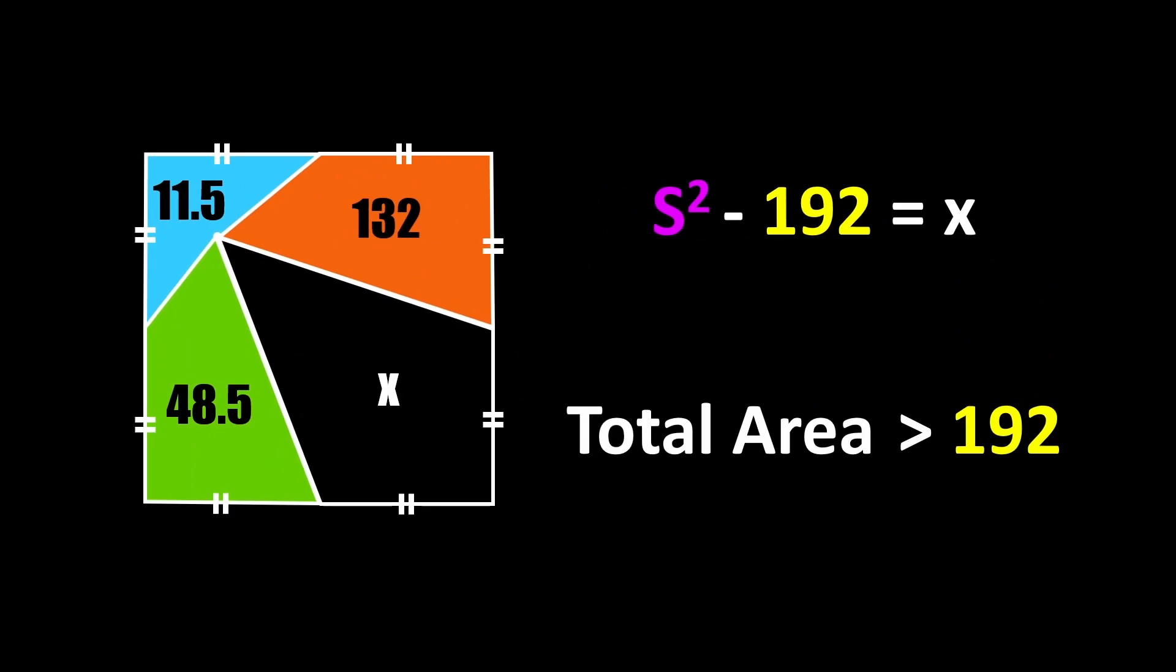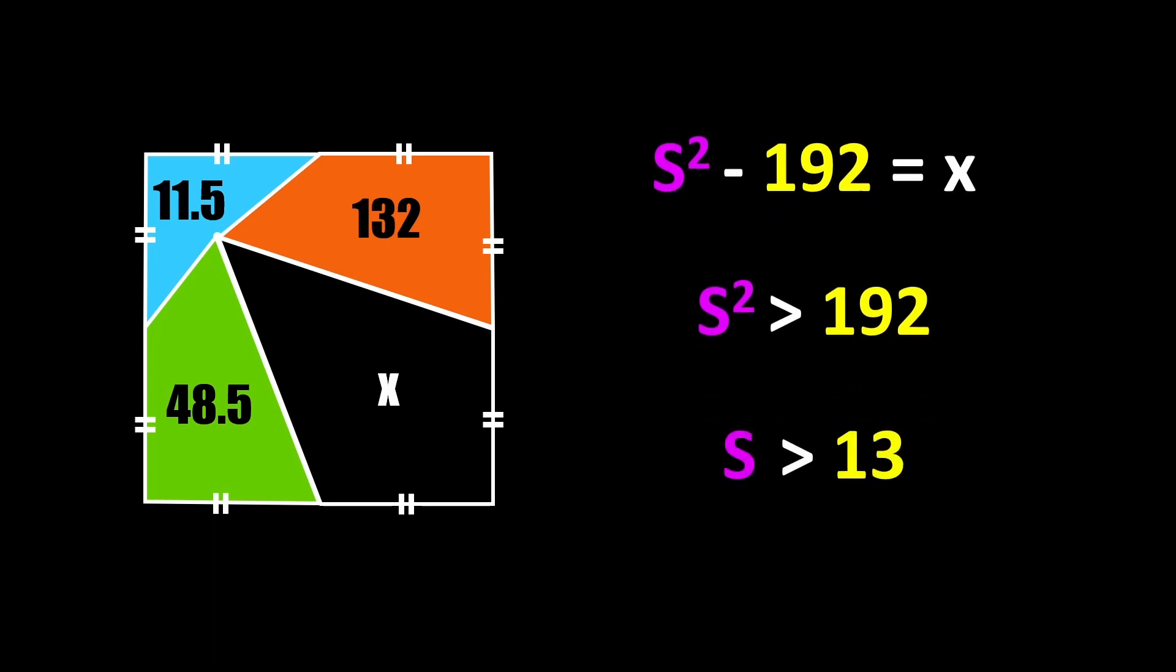Here's how we'll do it. To start we know that the total area must be greater than 192 because that's the sum of these three smaller areas. So that means s can only be numbers that are greater than 192 when you square them which works out to s needing to be a number greater than 13.